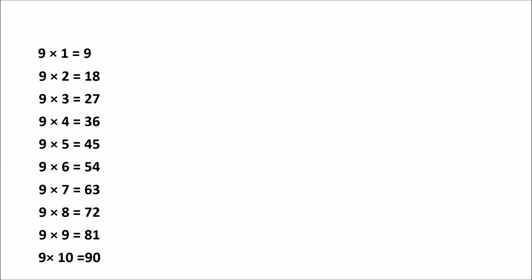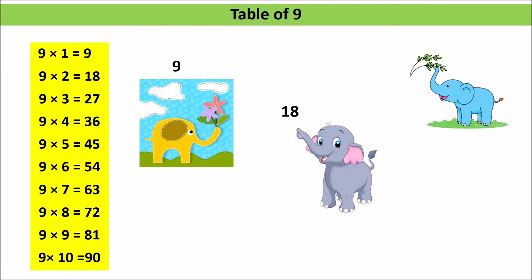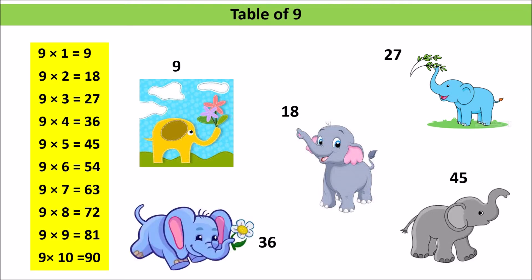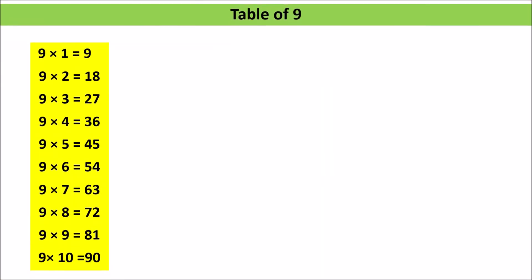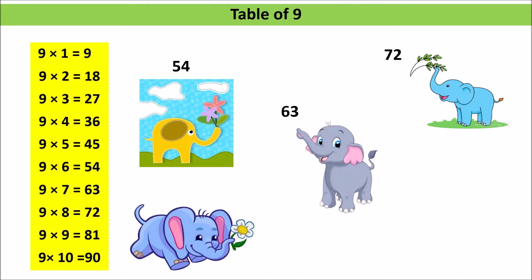Table of 9. 9 1s are 9, 9 2s are 18, 9 3s are 27, 9 4s are 36, 9 5s are 45, 9 6s are 54, 9 7s are 63, 9 8s are 72, 9 9s are 81, 9 10s are 90.